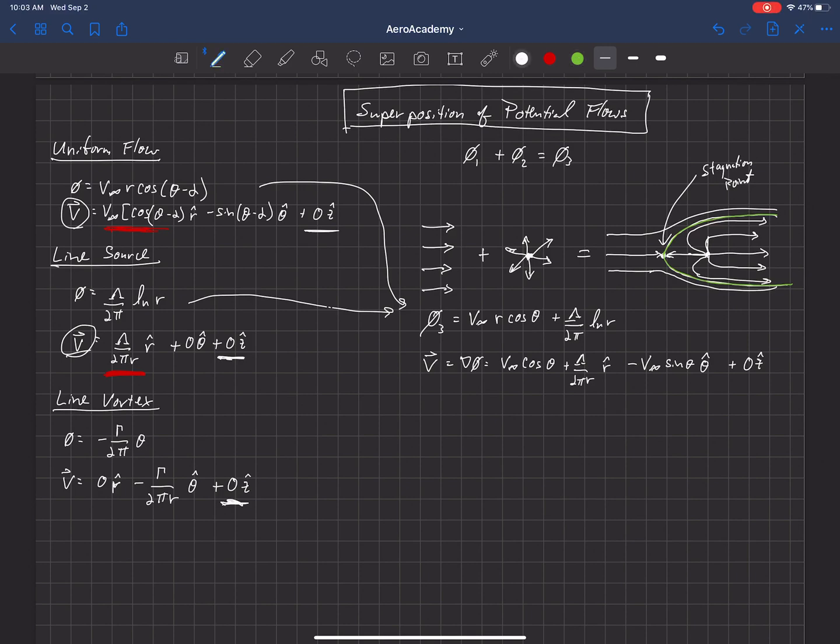So we can also find the location of the stagnation point by using this velocity equation here. What we're looking for is where that velocity in cylindrical coordinates is (0, 0, 0). So let's start at the right-hand side here with z. That's easy. It's always 0 because this is just a two-dimensional slice here, and it doesn't have any flow in the z direction.